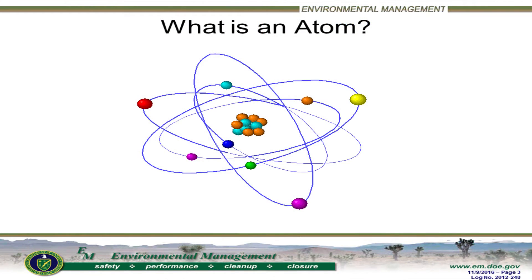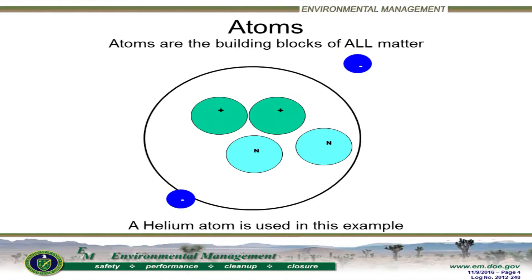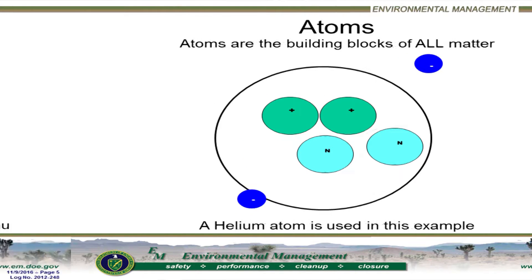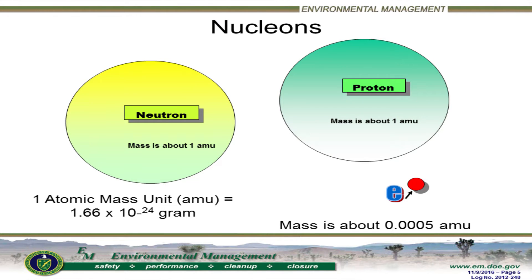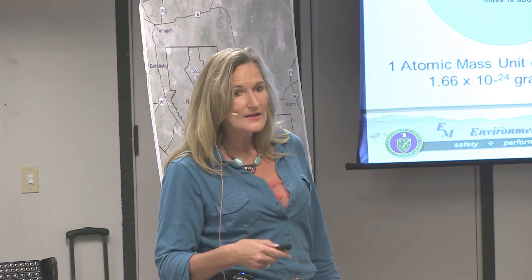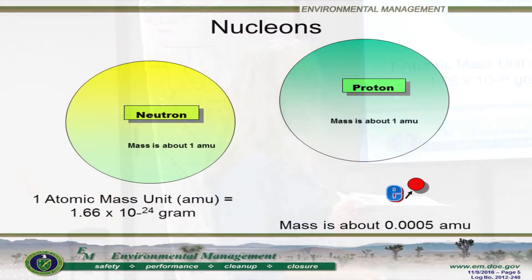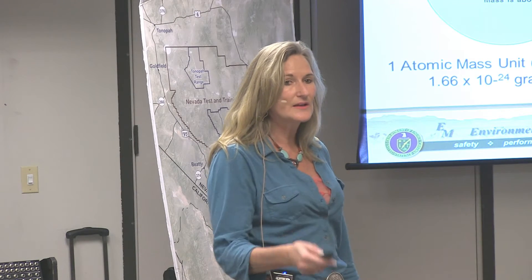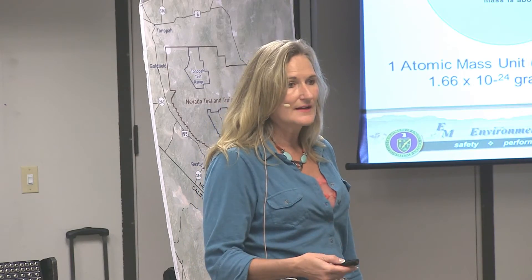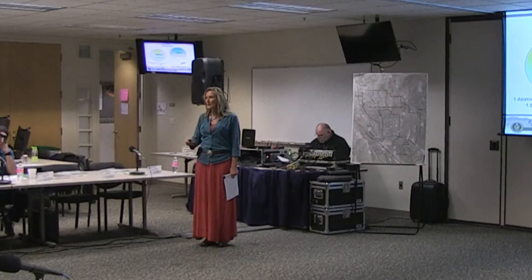It all starts with the atom. No matter how long you've been out of high school science, most people remember that you have a nucleus made up of neutrons and protons, and then electrons circling in orbits outside the nucleus. Atoms are the building block of all matter. This schematic shows how large neutrons and protons are relative to the electron — that little orbiting particle. Neutrons and protons have a very small atomic mass, but compared to the electron, they're much larger. That mass difference is very important as we move forward.